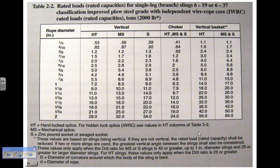This table gives information on rated load capacities. Note that these values are based on slings being vertical. If they are not vertical, the rated capacity shall be reduced. If two or more slings are used, the greatest vertical angle between the slings shall also be considered. These values only apply when the D-to-d ratio for MS or S slings is 40 or greater, up to one-inch diameter.